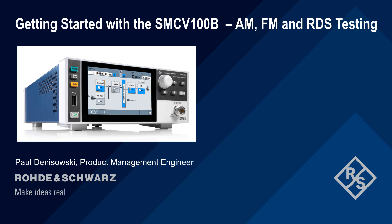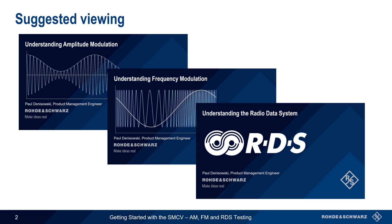Hello and welcome to this presentation: Getting Started with the SMCV100B AM, FM and RDS Testing. This presentation shows how to use a Rohde & Schwarz SMCV100B vector signal generator to create broadcast AM and FM test signals, as well as how to configure RDS subcarriers. It assumes a basic understanding of amplitude modulation, frequency modulation, and the Radio Data System, or RDS.